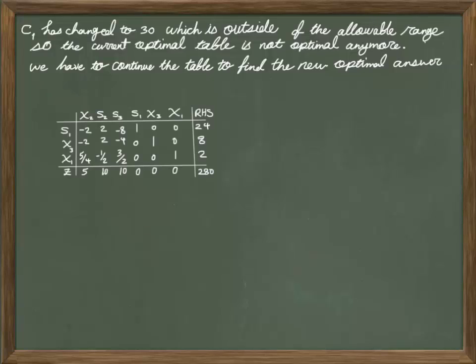So how do we do that? Remember, this was the final table that we were given. With adding delta, this is the new coefficient for the row of Z for non-basic variables.